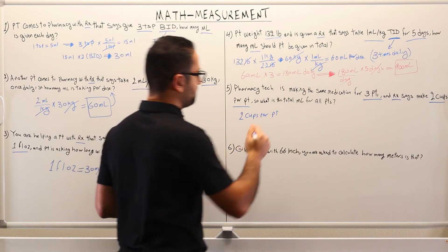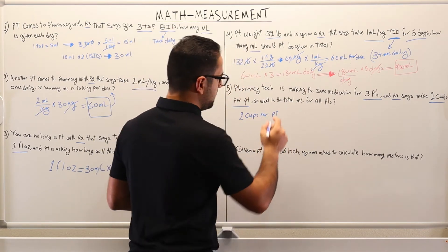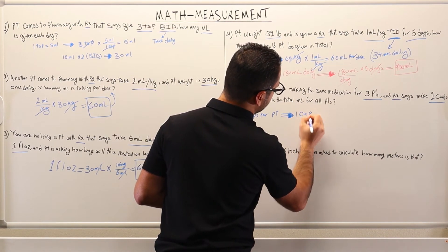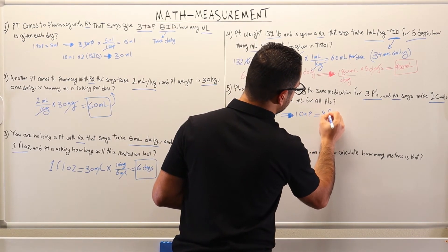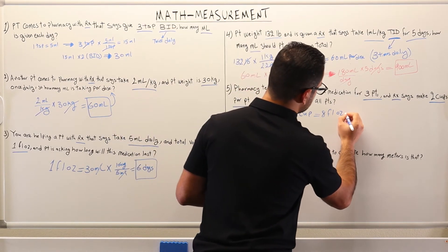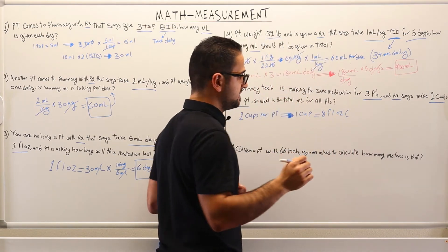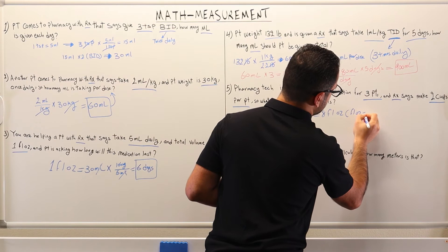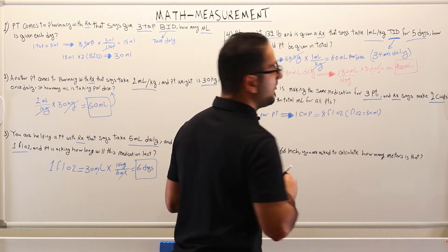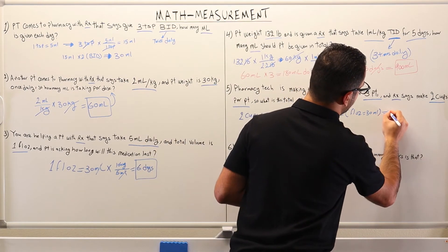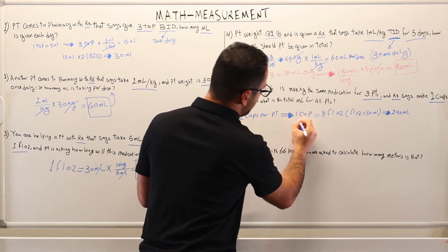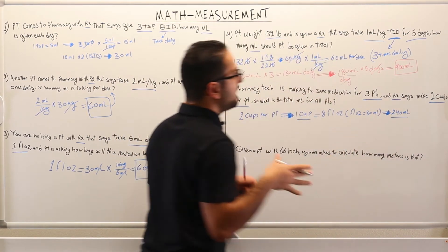First we need to figure out how many milliliters are in each cup. From the previous video, one cup equals eight fluid ounces. And each fluid ounce equals 30 milliliters. So multiplying eight by 30, we get 240 milliliters. So every one cup has 240 milliliters in it.